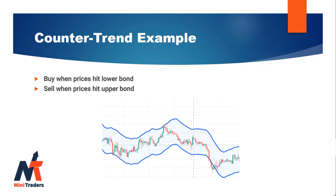We can also use it as an overbought and oversold indicator. Rules are again simple: buy when price reaches the lower bound, sell when price reaches the upper bound. For doing this, we should use wider bounds. As you might have noticed, these ways of trading are not necessarily what we want on their own.